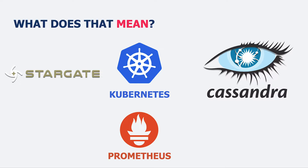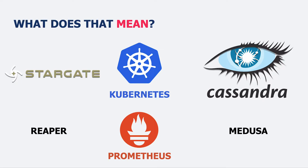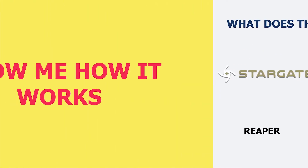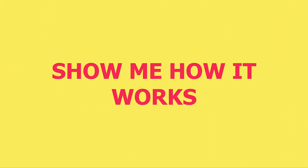We store that information inside of Apache Cassandra. Next, we use Prometheus to expose metrics for all the components within our stack. Finally, we have Reaper and Medusa, which are Cassandra-specific tools that provide backup and restore as well as repair services. So let's see how it works.